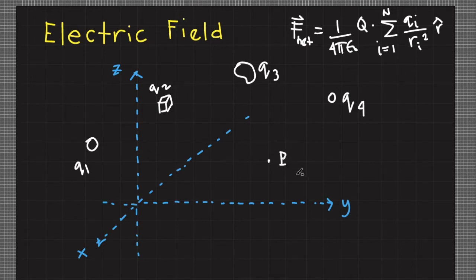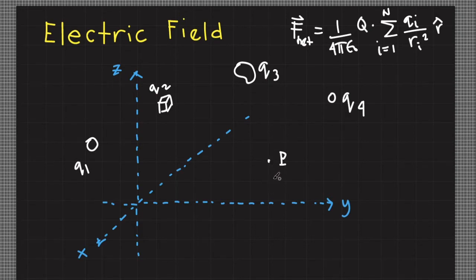When you have source charges, they alter the properties of a point in space such that when you place another charge on that point, it will experience an electric force. Focusing on one charge, for example q sub 3, when it is placed in a position it alters its surroundings by means of an electric field. If we measure that electric field at point P and move point P farther away from q sub 3, the measured electric field weakens because it is a function of position. Nevertheless, this electric field has an infinite reach in all directions.